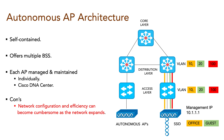In a large enterprise with hundreds or thousands of APs, it can bring a large workload and high costs, so Autonomous AP is more suitable for small office networks.